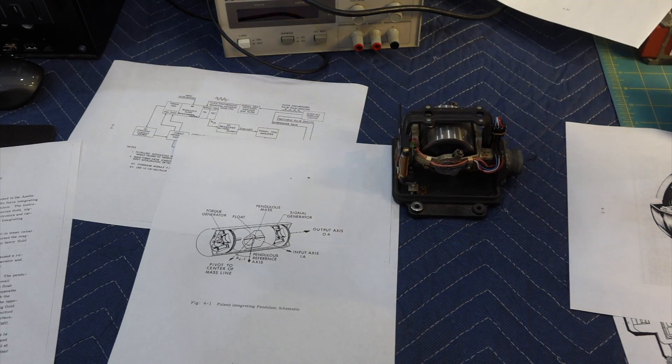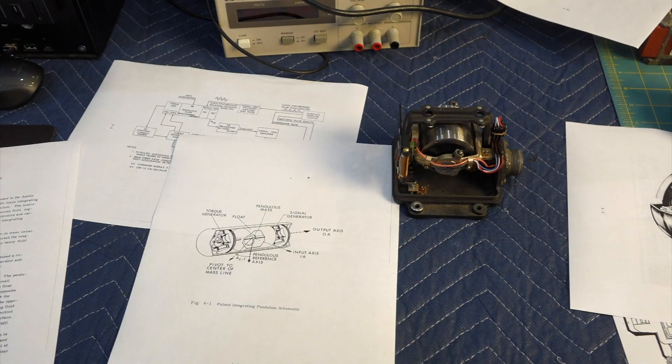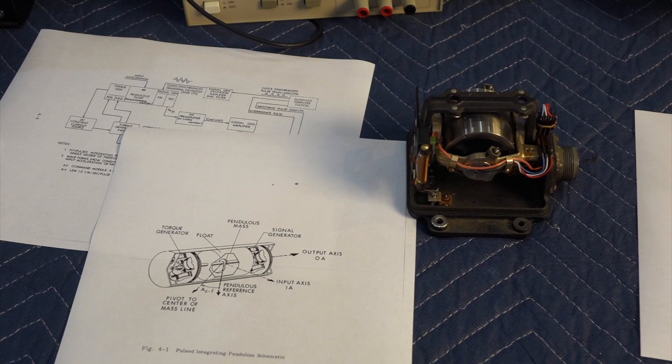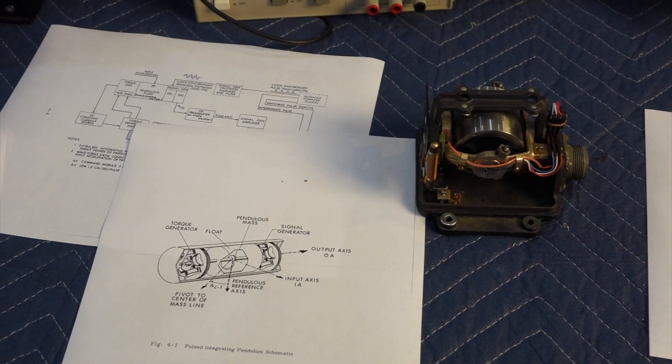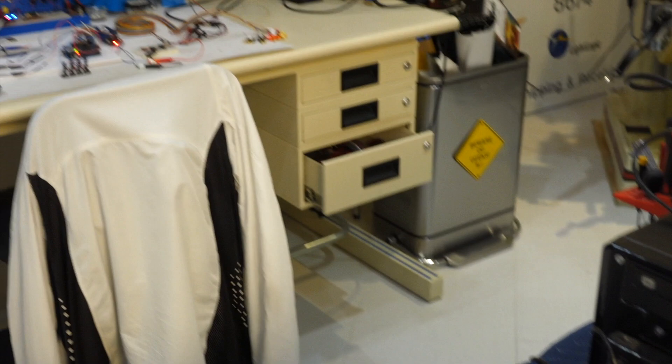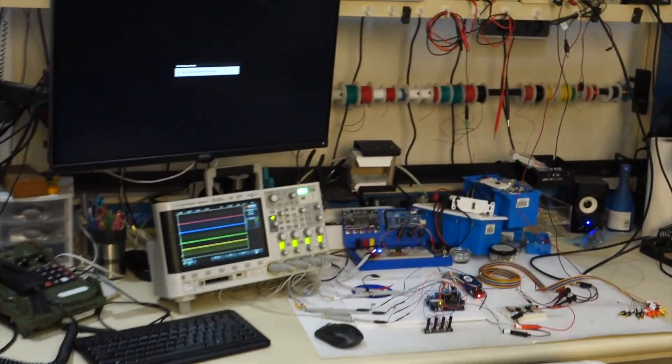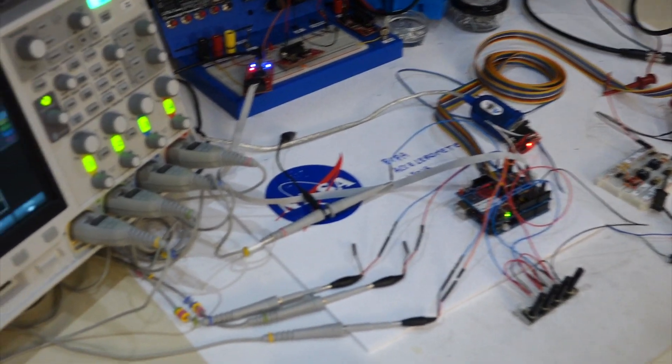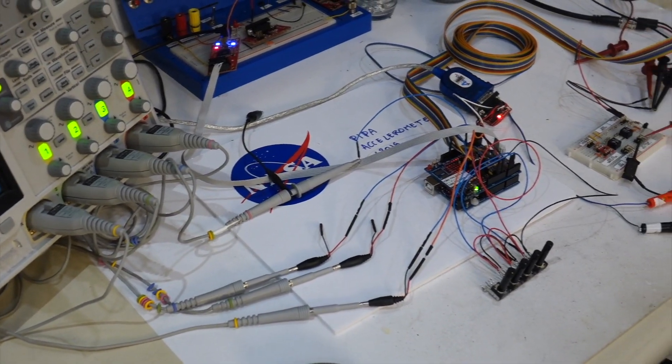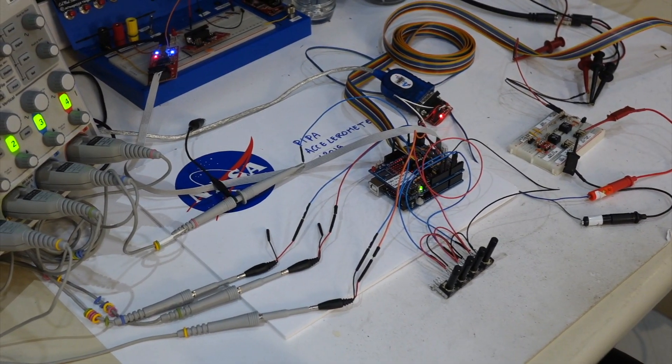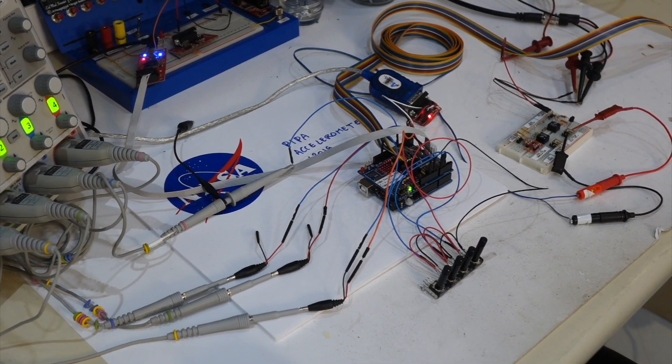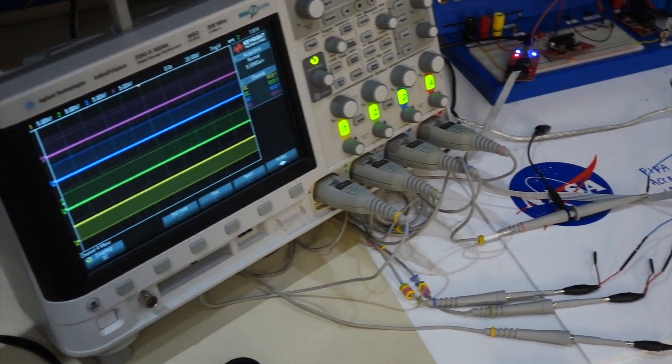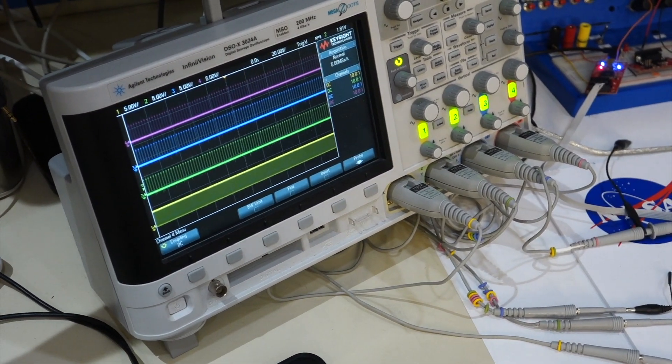So unfortunately I don't have a real PIPA. There was one on sale, and I didn't go for it. I didn't know I would have needed one. But for the purpose of what we want to do, we can make a poor man's replica, it's over here, and it's made with an Arduino platform. I use the Atmel chip in it, I don't really use the fact that it's an Arduino.